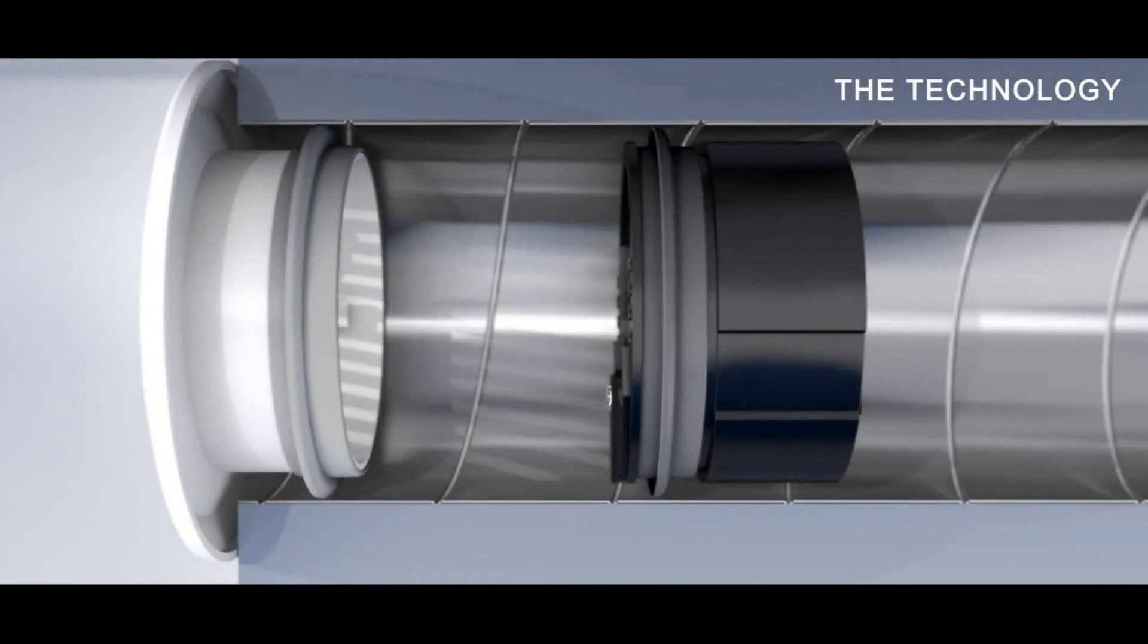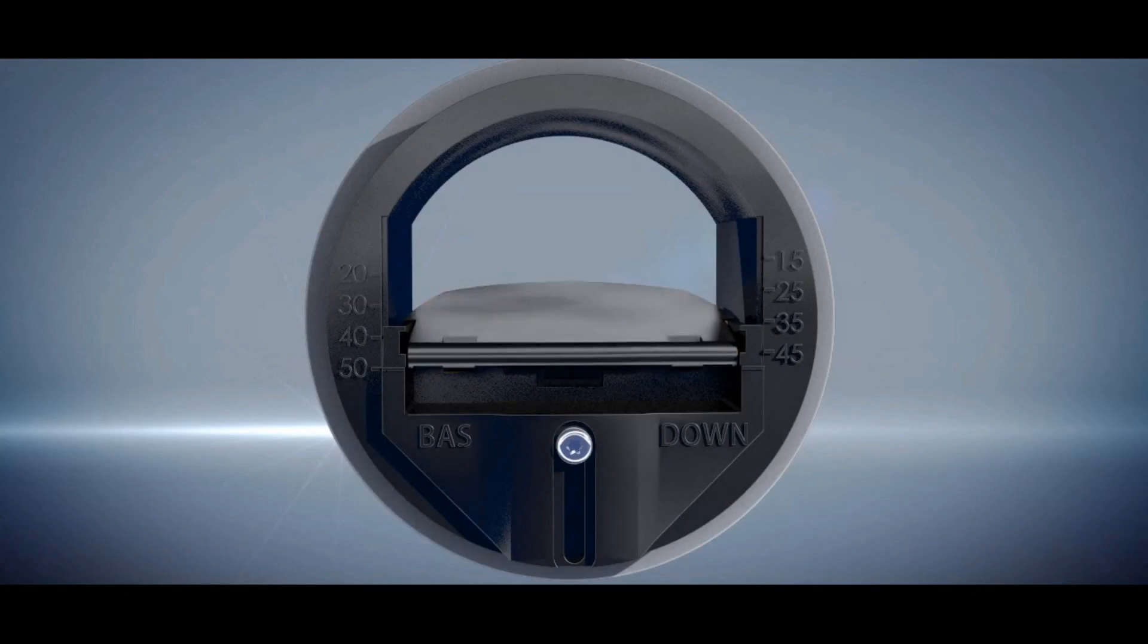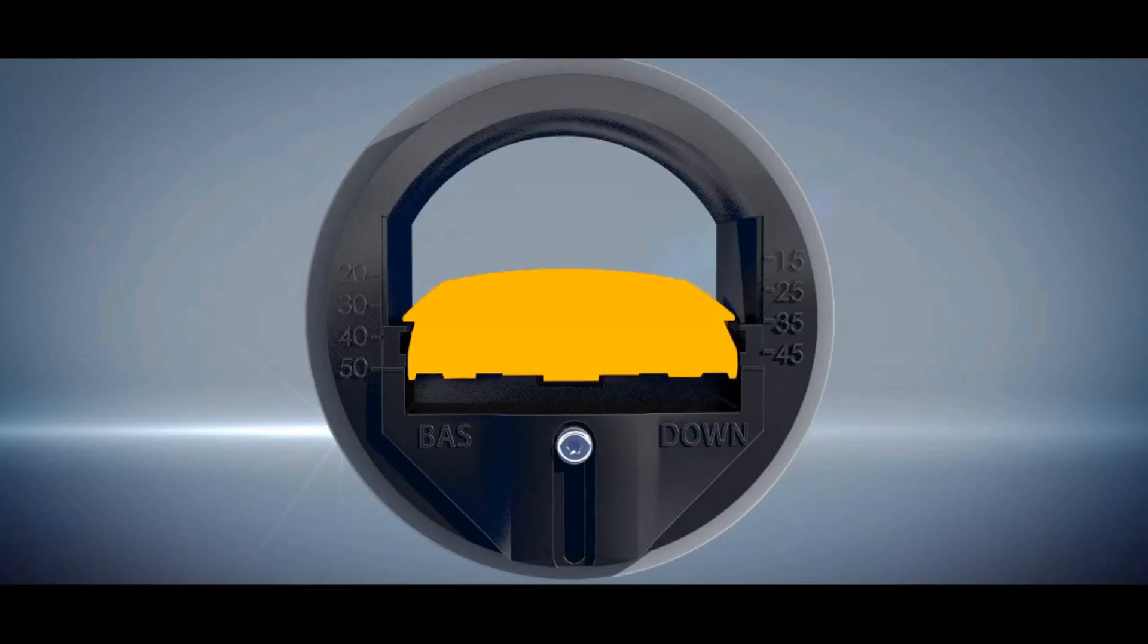The flap of the flow regulator will adjust according to the difference of pressure between the room and the duct. The flap opens or closes progressively to reduce or increase the amount of air needed to maintain a constant air flow in the duct.